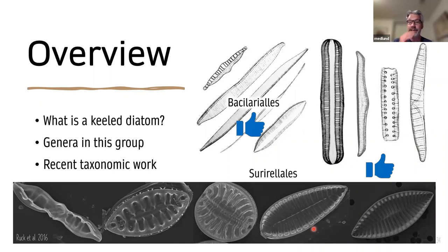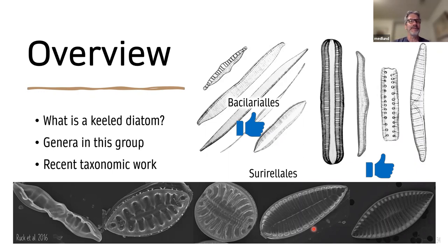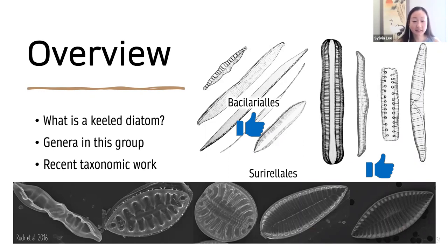I don't see any hands raised just yet. I wanted to ask you one quick question, Sylvia. What happened to the genus Petrodictyon — it was a little Surirella gamma. Where did that end up? I think that's still a thing. Petrodictyon still exists. I can't remember if that was one of the genera where the monophyly was questionable or not yet resolved, but I didn't really go over the marine genera here, and it still exists.